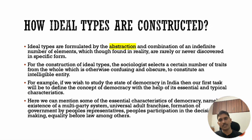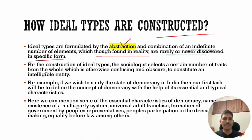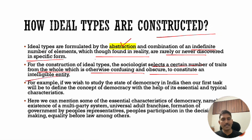Now let us see how ideal types are constructed. Ideal types are formulated by the process of abstraction and combination of an indefinite number of elements which, though found in reality, are rarely or never discovered in a specific form. For the construction of ideal types, the sociologist selects a certain number of traits from the whole — which is otherwise confusing or obscure — to constitute an intangible entity.